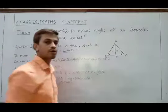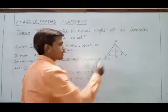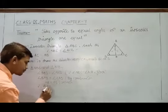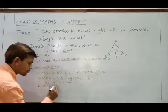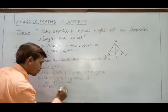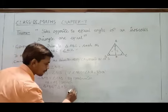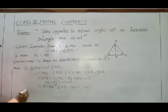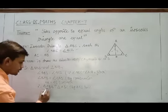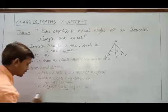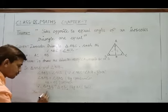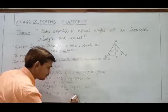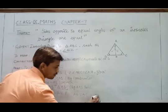Therefore, triangle ABD is congruent to triangle ACD by the AAS congruence rule. Hence, by CPCT (corresponding parts of congruent triangles), we get AB equals AC, which is what we had to prove.